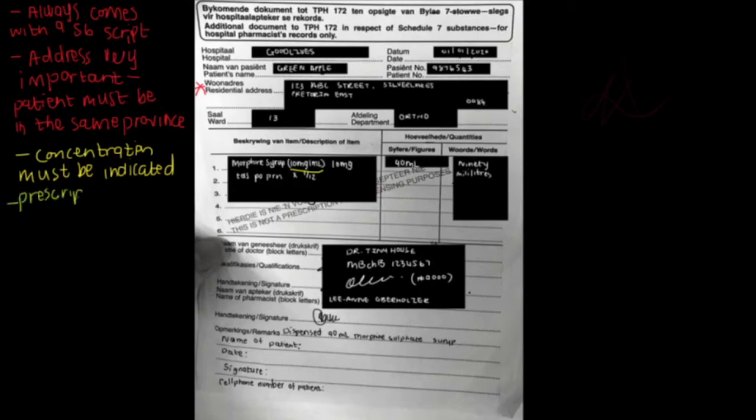Now remember, the prescription stays in the patient's file. The TPH is the one that we keep in the pharmacy for our records. So the information on the prescription and the information on the TPH must be exactly the same. For example, the script can't say 10 milligram morphine BD, while the TPH states 10 milligram TDS.